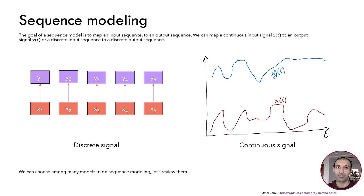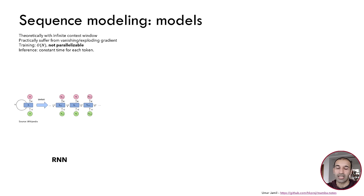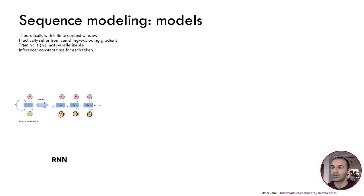We can choose among many models to do sequence modeling. The first model that comes to mind is the recurrent neural network, which has a hidden state and computes the output as follows. We have an input sequence x1, x2, x3. The first hidden state is initialized with zeros; we feed the network the hidden state along with the first input and it produces the first output. Then we use the previously produced hidden state along with the new input token to produce a new output token and a new hidden state, and so on.